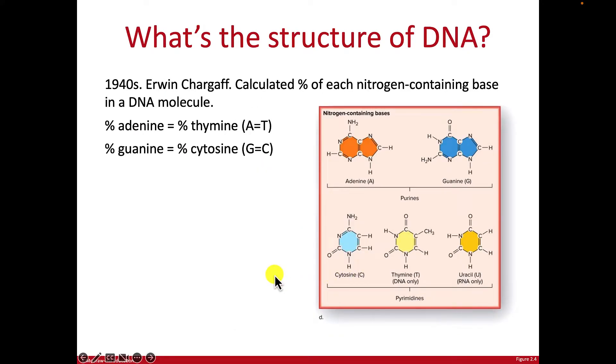In the 1940s, Erwin Chargaff found an interesting piece of data he didn't know what to do with. He measured the percent of each type of nucleotide in DNA. And what he found was that the percentage of adenine equaled the percentage of thymine, so this orange one here and this yellow one they equaled each other. And the percent of guanine, dark blue, equaled the percent of cytosine, which is this light blue. He didn't know what to do with it, but that became important for Watson and Crick later when they were building their models.